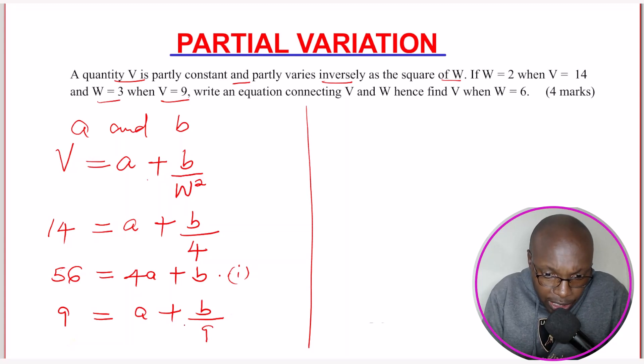Again, multiply each term by 9 to get rid of this denominator here. So this will give you 9 times 9, you get 81. This equals to A plus B over 9 times 9, you get B. So this one will get 9. Sorry. A times 9, you get 9.